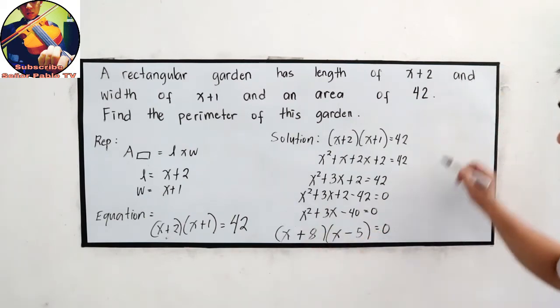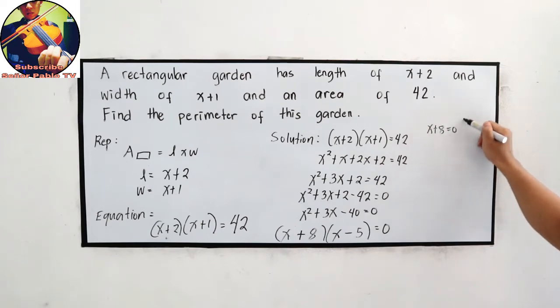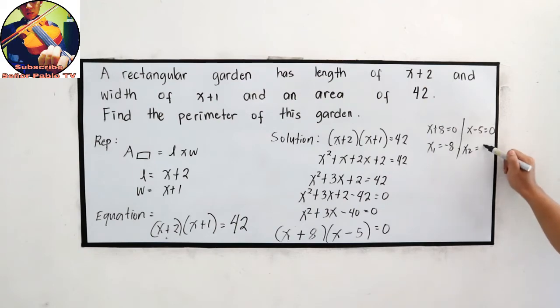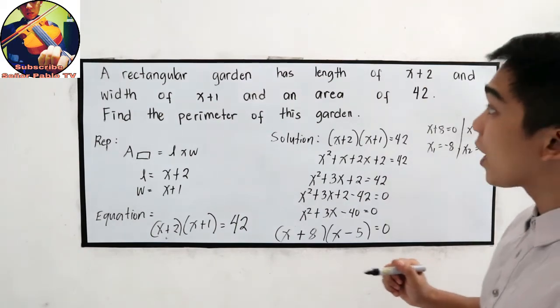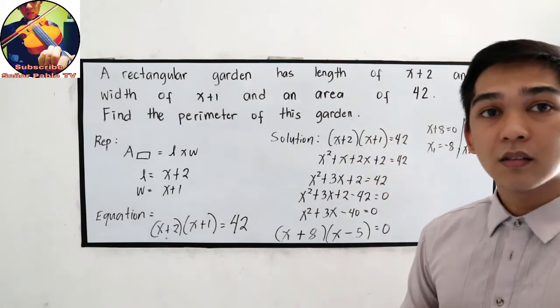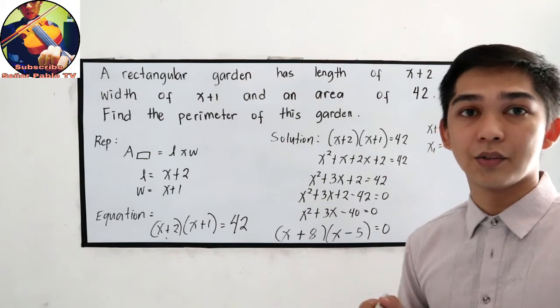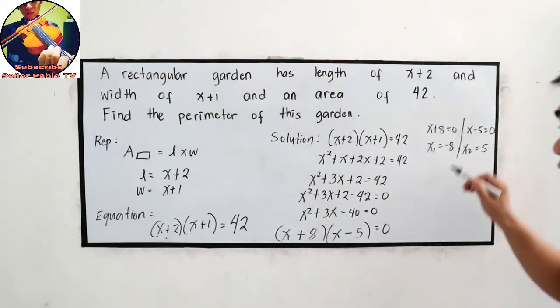Now if we get to 0, that is x plus 8 is equal to 0, and x minus 5 is equal to 0. x sub 1 is equal to negative 8, and x sub 2 is equal to positive 5. Since we are talking about the measurement, we will only consider the positive value. So we will omit negative 8 and consider the positive 5.